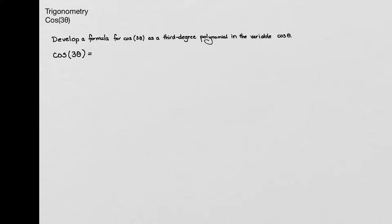In this problem, I'm asked to develop a formula for the cosine of 3 theta as a third degree polynomial in the variable cosine theta. So what I'll do in order to do this is I start with cosine of 3 theta, and I'm going to write this as the cosine of a sum, and the sum that I'm going to use is cosine of 2 theta plus theta.